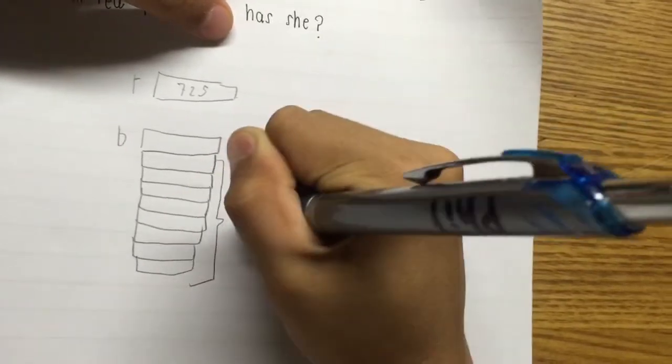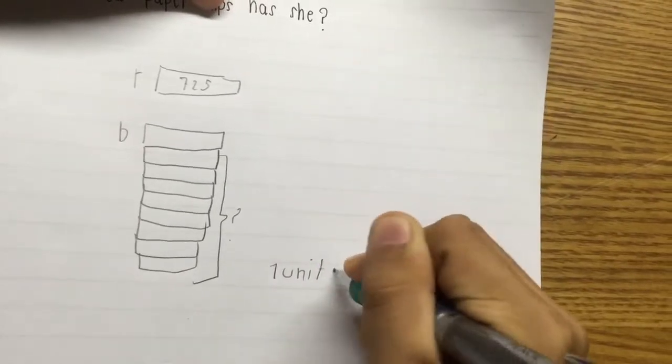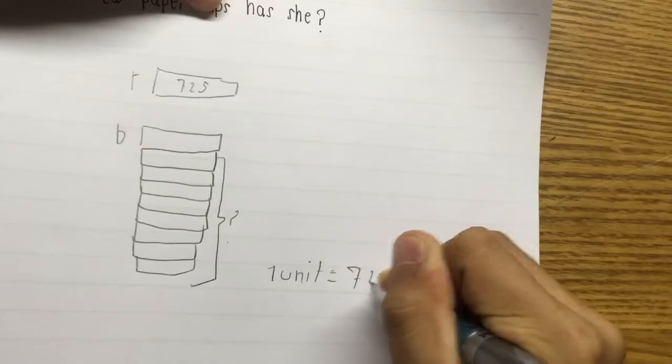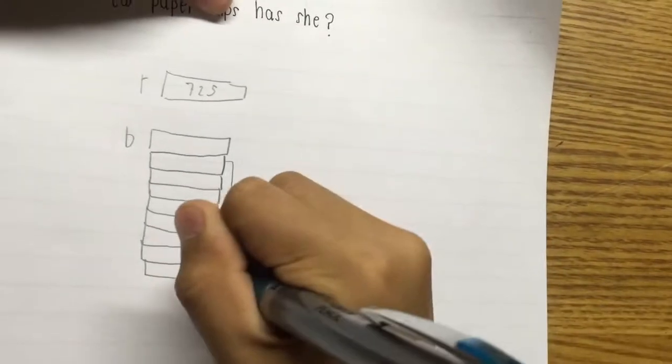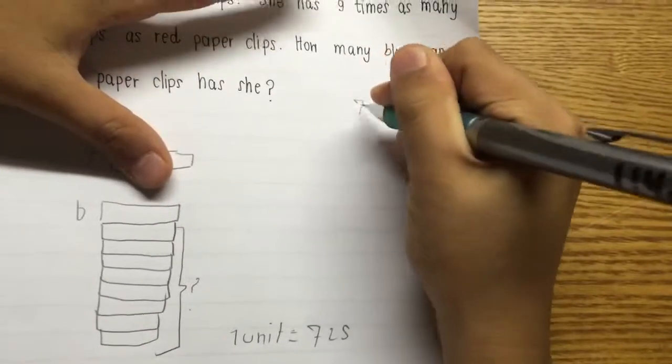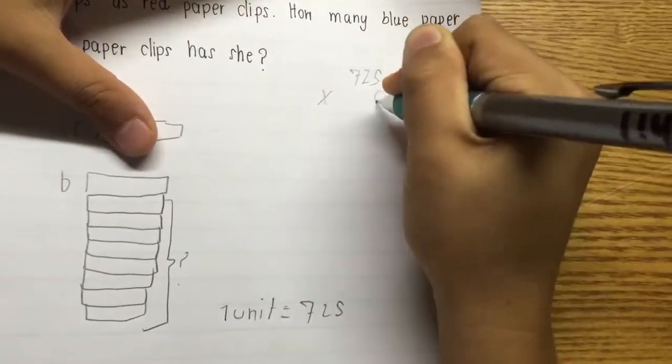So, we find this. Each one, 1 unit equals to 725. 1, 2, 3, 4, 5, 6, 8 units. So, 725 times 8.